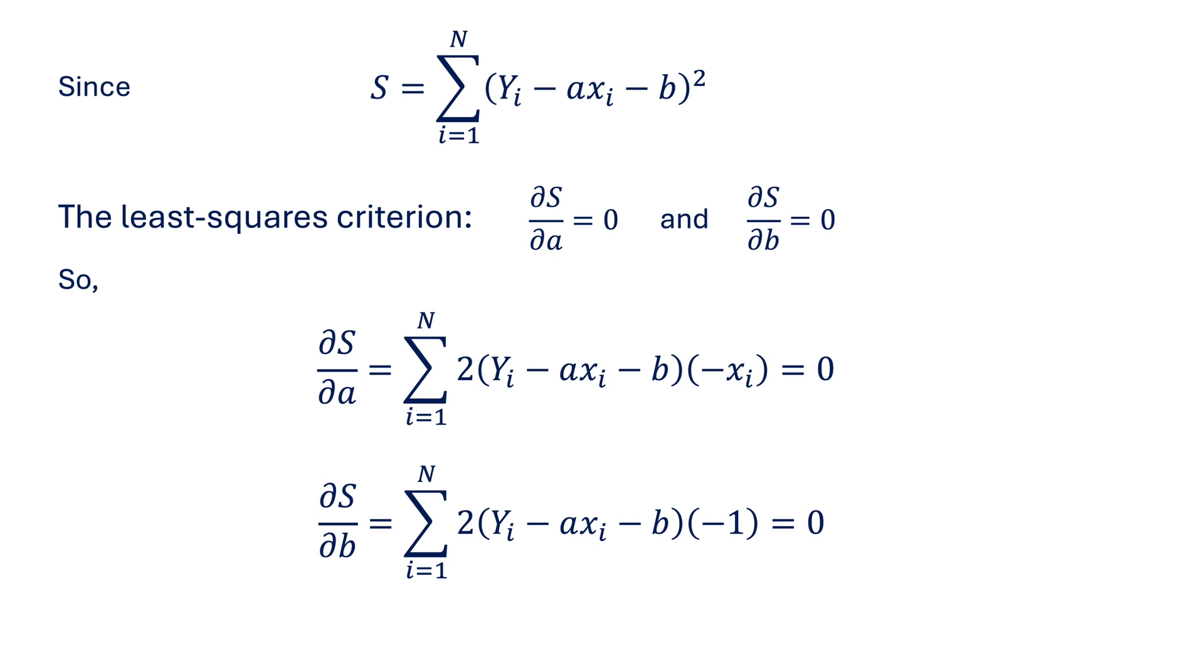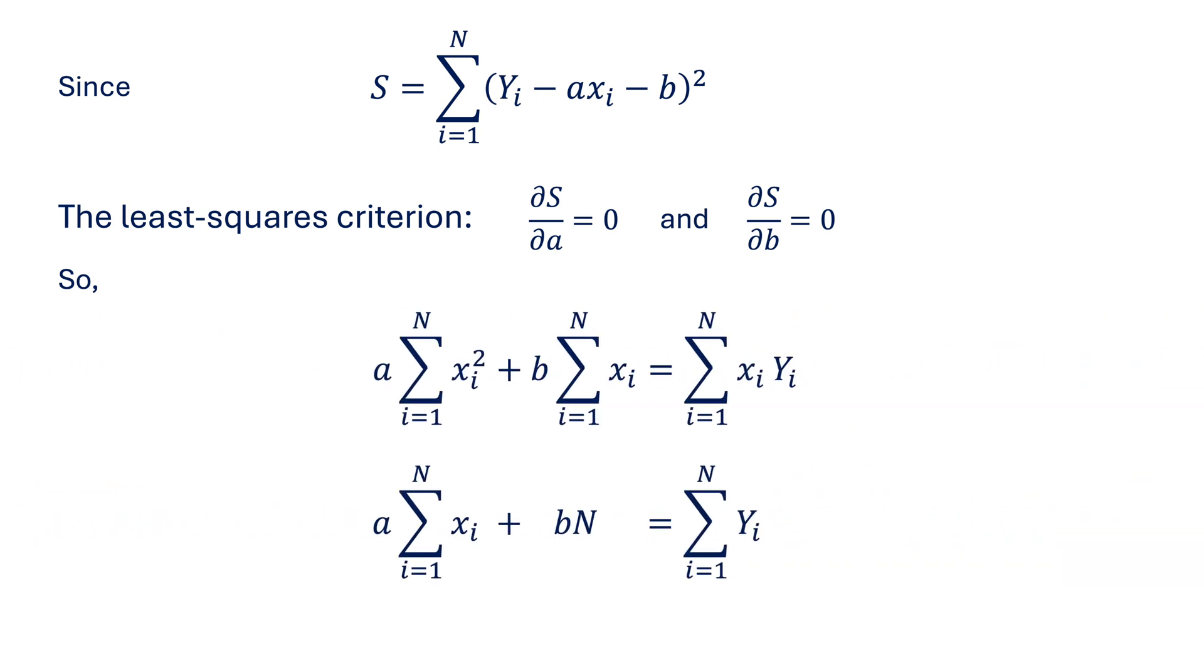Now, by dividing by minus 2 and expanding the summation over the terms, we get this final set of equations. And as you see here, this is a system of two equations with two unknowns, a and b.